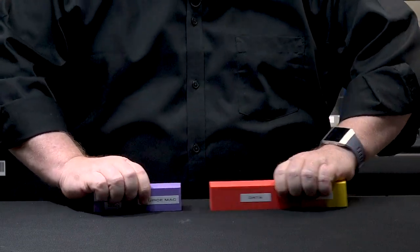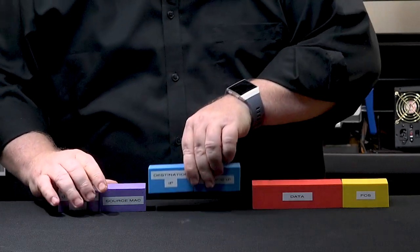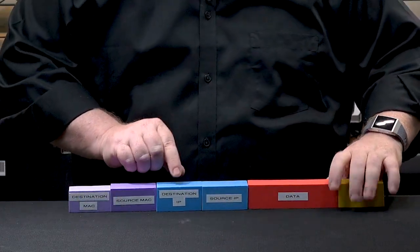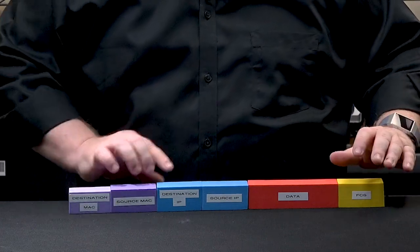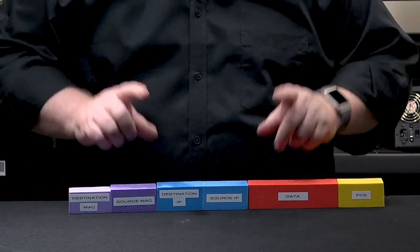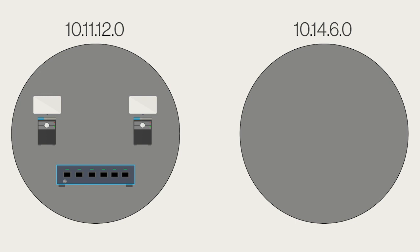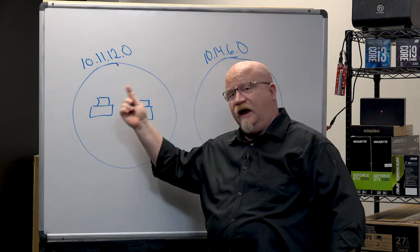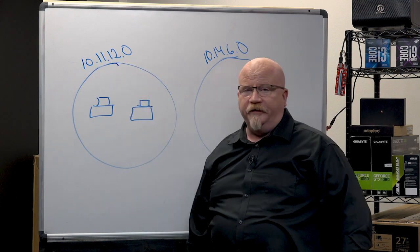With IP addressing, we're going to add something to our frame — specifically, we'll add the destination IP address and the source IP address. This allows us to jump from local area network to local area network. To watch all this in action, let's zoom in and look at two small local area networks connected together with the same router. There's a switch in here. Inside every one of these computers I've entered a value starting with 10.11.12.something. We put a 0 on the end to indicate the network ID.